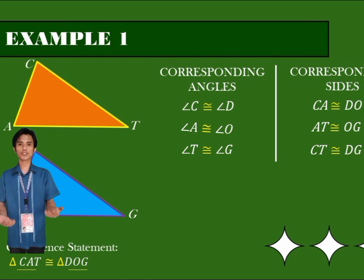Here we have triangle CAT and triangle DOG with a given measure of angles and sides. By applying the skills learned in identifying the corresponding angles and sides of a triangle, we can now easily find the measures of sides and angles of the triangle.